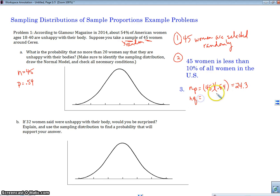And NQ is going to be 45 times 0.46, which is 20.7. All right. So both of these are greater than or equal to 10. So they both check out.